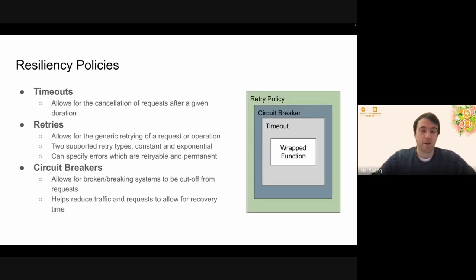So what does every part of the resiliency structure mean? There are three main policies. We have timeouts, we have retries, and we have circuit breakers. Timeouts are the easiest out of all these guys. They simply let us specify a duration, and after that duration has expired, we timeout, and the request fails.